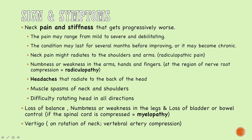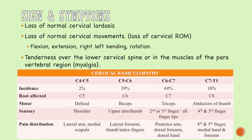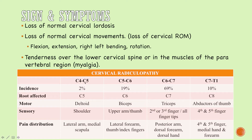Vertigo is another symptom, especially on rotation of the head. Additional signs include loss of normal cervical lordosis and loss of range of motion — flexion, extension, right and left lateral bending, and rotation. There is tenderness over the lower cervical spine and the paravertebral muscles. In cervical radiculopathy, for example, impingement of C4-C5 nerve roots leads to sensory and motor deficiencies of the deltoid and shoulder region.